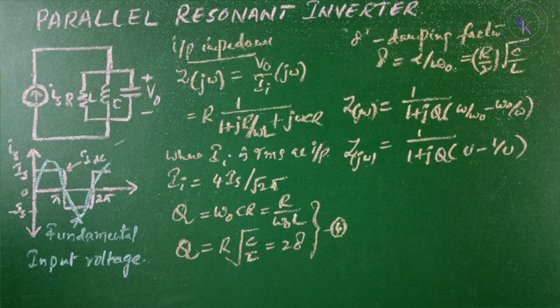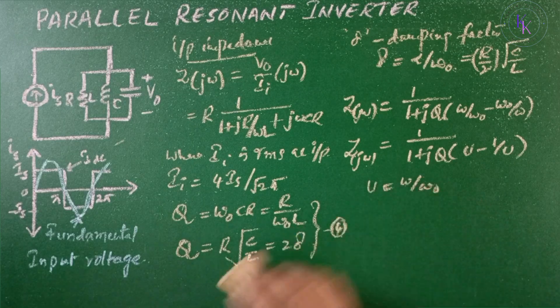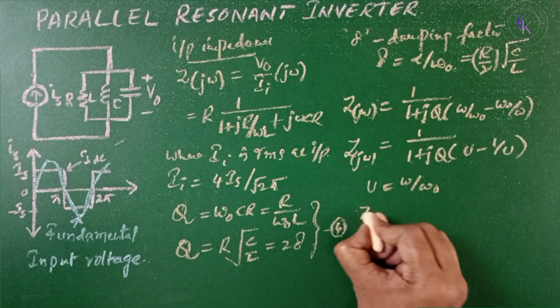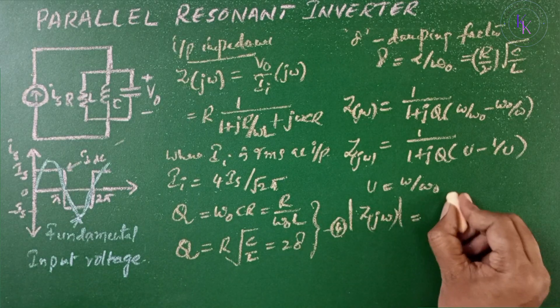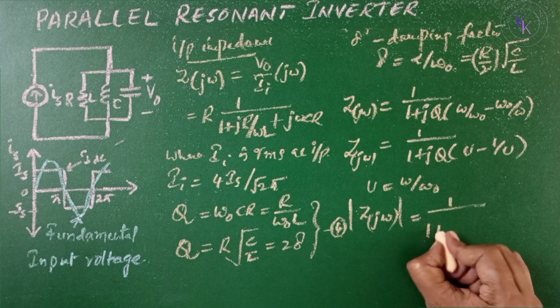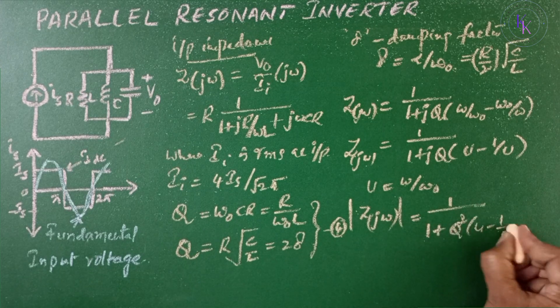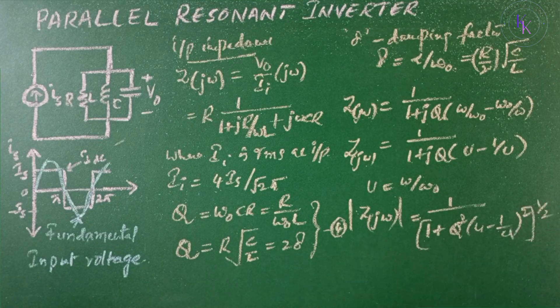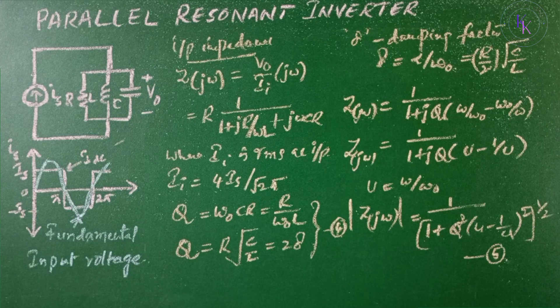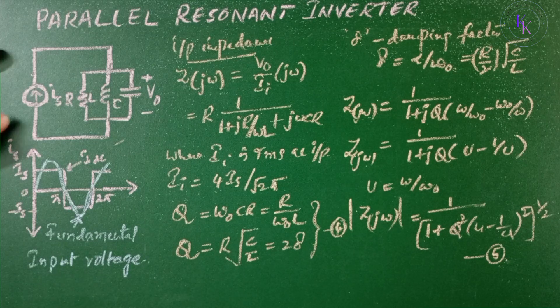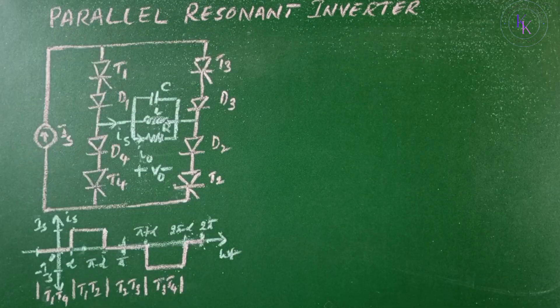This is the input impedance, where u = ω/ω₀. The magnitude of input impedance |Z(jω)| is given by 1/√(1 + Q²(u - 1/u)²), equation 5. This is the input impedance of the parallel resonant inverter circuit.